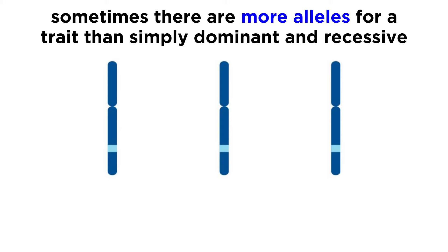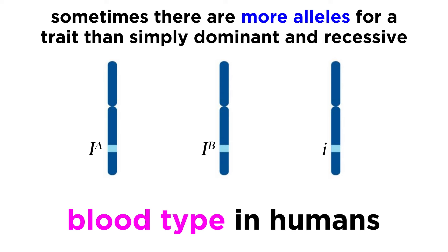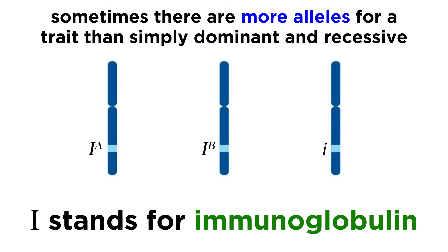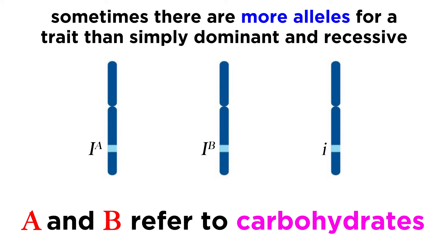Now with the understanding that all alleles will be expressed, we can better understand situations involving multiple alleles, meaning more than simply one dominant and one recessive. An example of this is blood type in humans. With this, there are three alleles that are possible for a single gene: Ia, Ib, and lowercase i, where the I stands for immunoglobulin. The letters A and B refer to carbohydrates that can be found on the surface of red blood cells, whereby the expression of Ia yields the A carbohydrate, expression of Ib yields the B carbohydrate, and expression of lowercase i does not result in any carbohydrate.